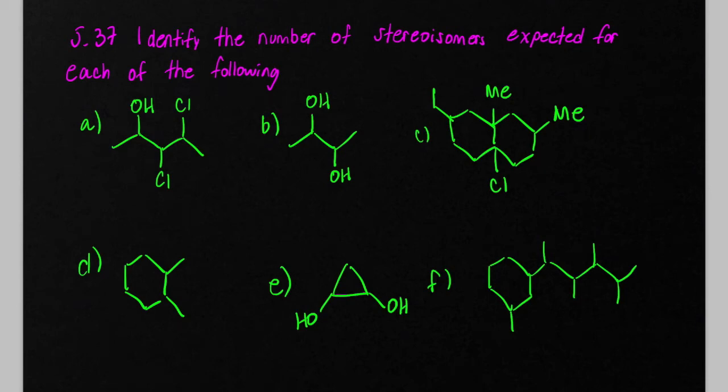Problem 37 in Klein's second edition chemistry textbook: we've got to identify the number of stereoisomers. So again, what we do is we identify a stereogenic center.